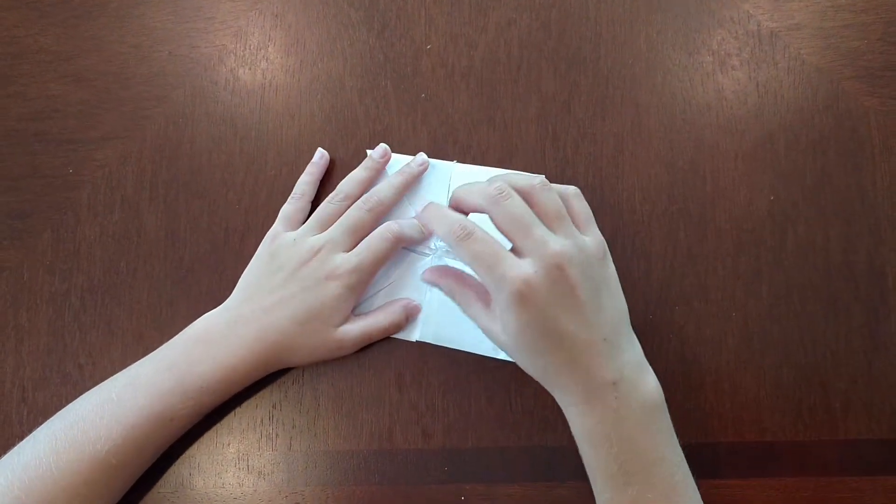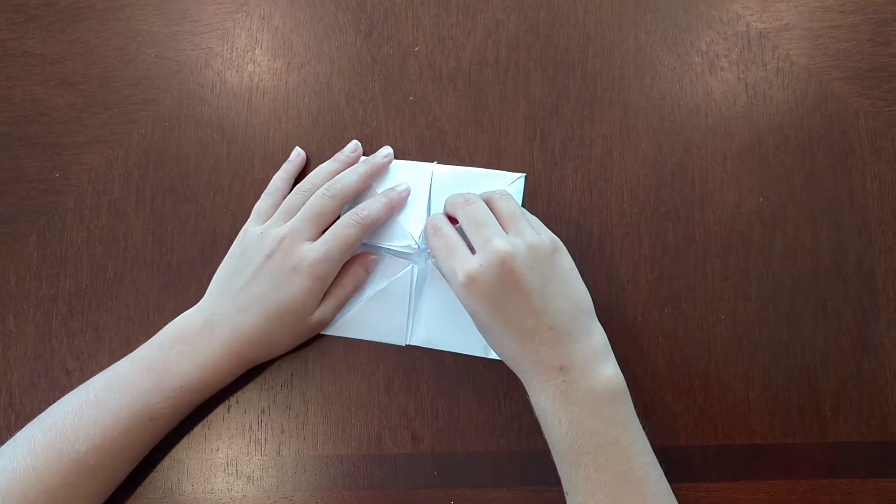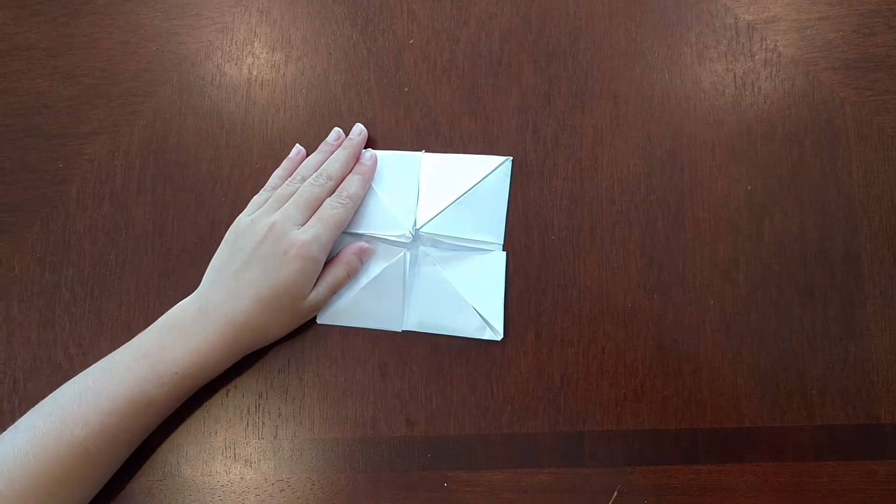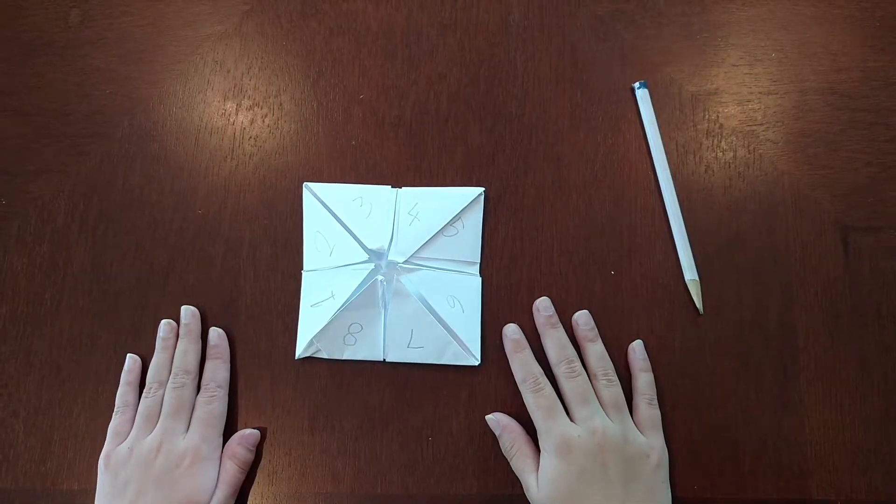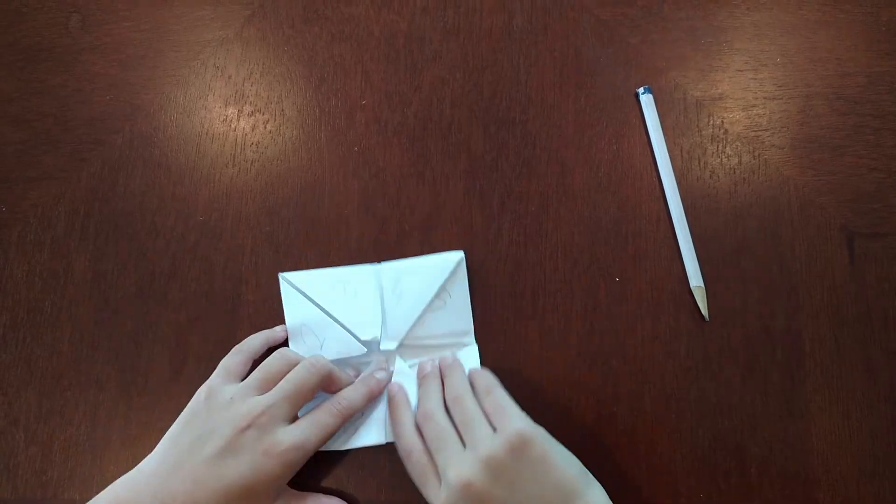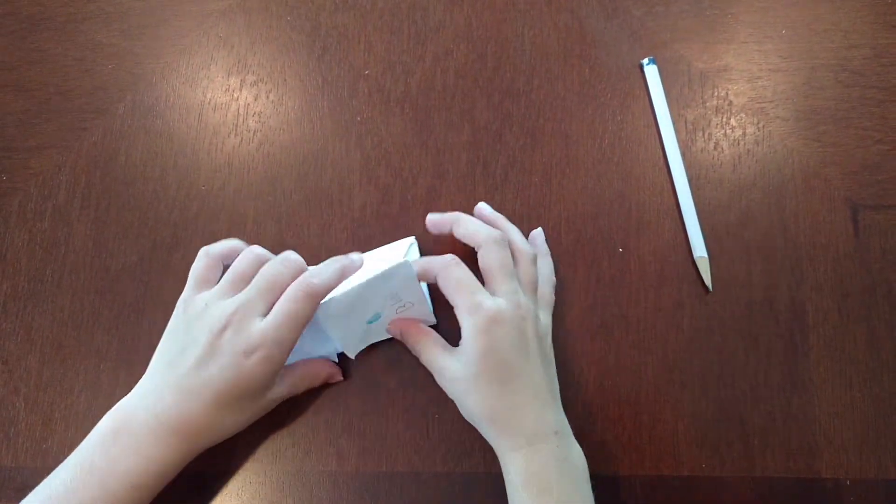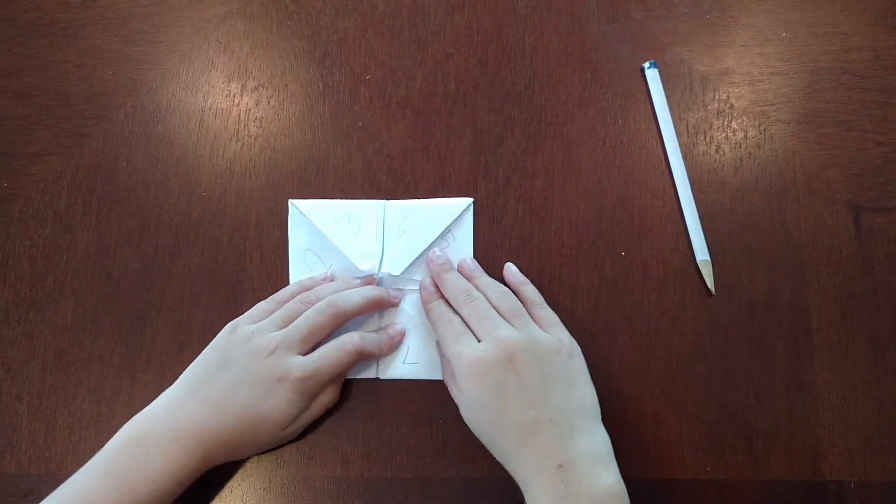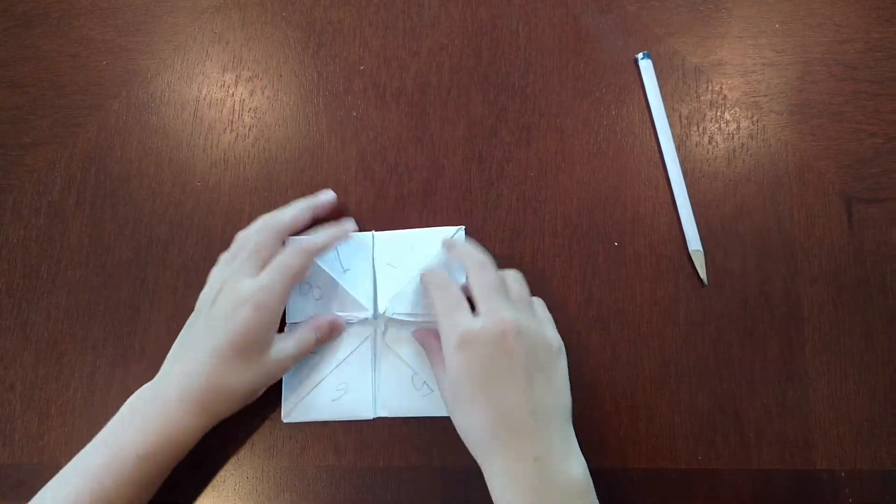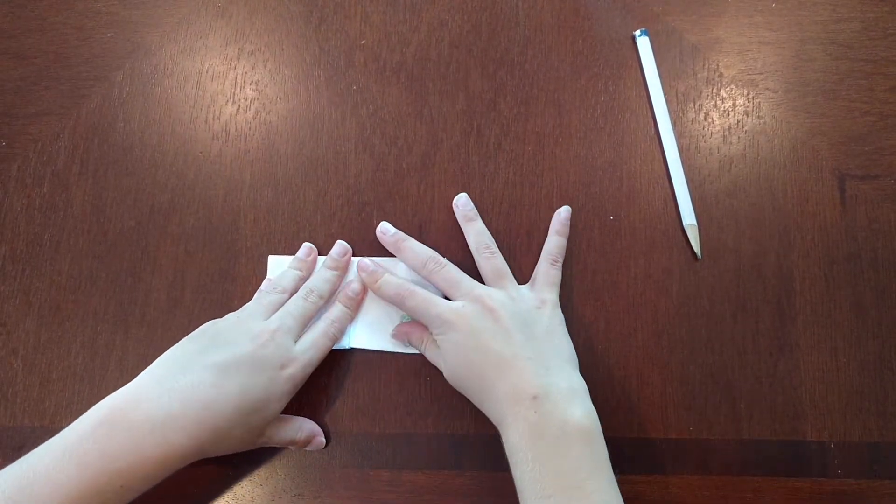Now, on top of every fortune, we're going to put a number. So it's going to go 1 to 8. Now that we have our numbers down, we're going to fold it like a hot dog. Press it down hard. Reopen it. Turn it. Fold it like a hot dog again, but upside down.